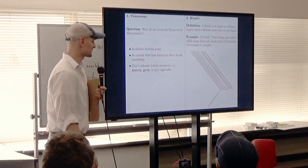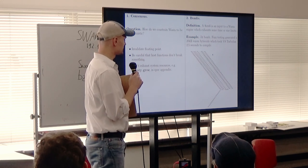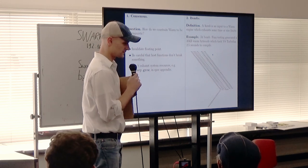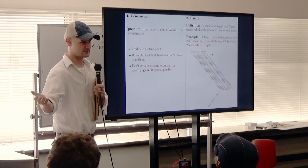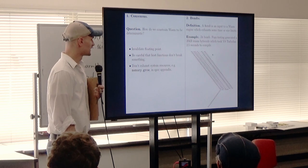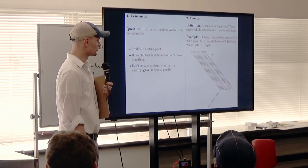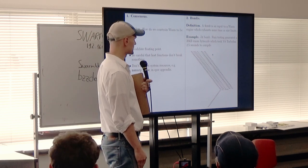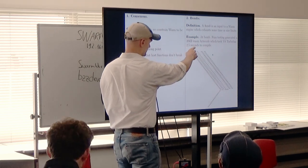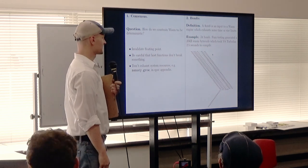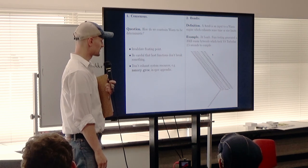Bombs are everyone's favorite topic. Define a bomb: it's an input to a WASM engine which exhausts some time or size limits. We have to say this is a bomb with respect to Ethereum size and time limits. An example Alex mentioned: a JIT bomb. Guido Reckon fuzz-tested and generated a 20 kilobyte WASM bytecode that took V8's compiler 2.5 seconds to compile. This is a bomb because in Ethereum we want up to 24 kilobytes and it should take under 200 milliseconds to compile. The pathological example shows very deeply nested loops, which cause TurboFan's sea-of-nodes algorithm to have quadratic computational blowup in the number of loops.